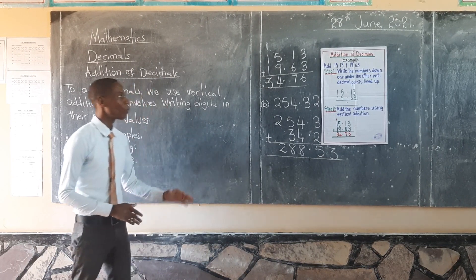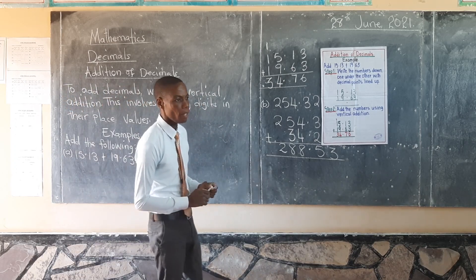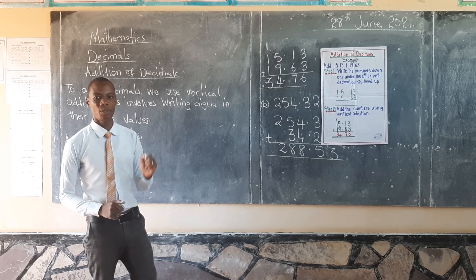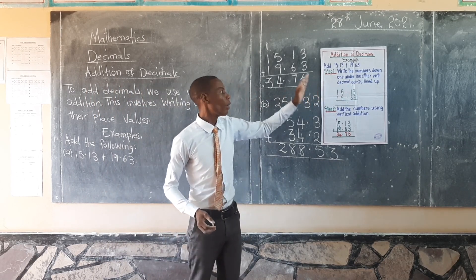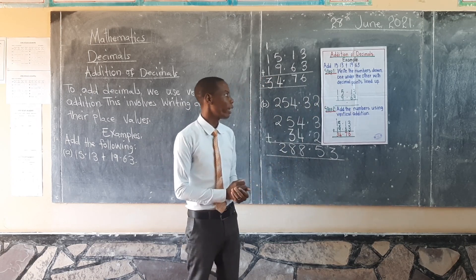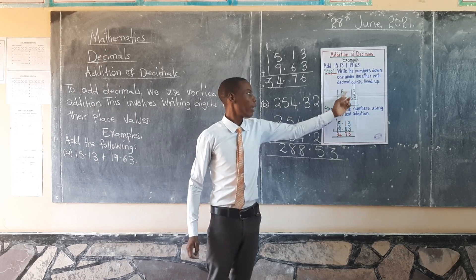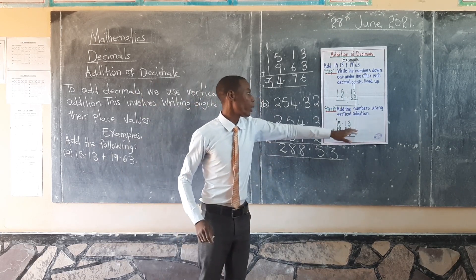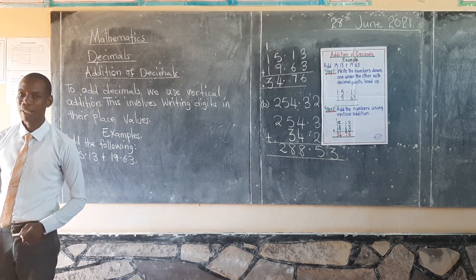Just to recap: to add decimal numbers, we use vertical addition. How do you go about with vertical addition? You write the numbers down one under the other, one digit under the other, with the decimal points lined up. The second step: you use vertical addition, starting from the far right. By doing so, you will be able to find the correct answer.